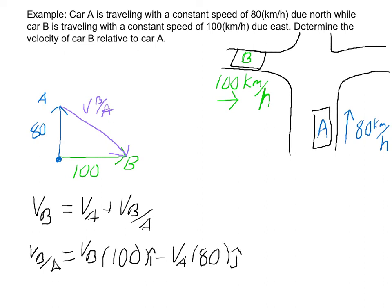So now we'll solve this using Pythagorean's theorem. And so V sub A squared plus V sub B squared. Take the square root, and you'll get V sub B with respect to A. And your total answer equals 128 kilometers per hour.